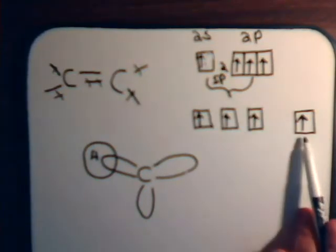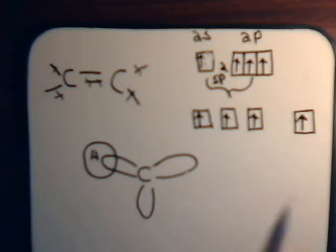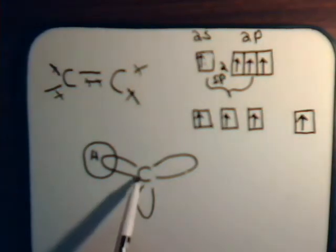But we still have, for each carbon has a single electron in the p orbital. Remember, this remaining p orbital is perpendicular to this plane. It could be going above and below the plane, or it could be going in front of and behind the plane.